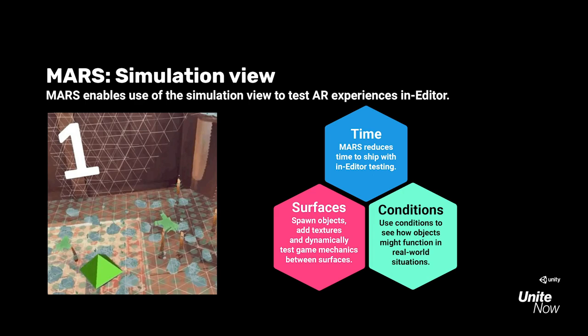The simulation view: Mars enables the use of the simulation view to test AR experiences in the editor. We can use surfaces to spawn objects, add textures, and dynamically test game mechanics between different surfaces. We can also add conditions to see how objects might function in real-world situations. These features are critical for AR development because they allow us to test things without making a build to device, which can often be time-consuming. Mars reduces the time to ship with within-editor testing. In the GIF at left, you can see we're using Mars on device to draw a bridge between a ground plane and a table. Because Mars knows the Y and Z depth differences between two planes, the bridge drawn with rocks is at exactly the right angle, and our character is able to run between them.